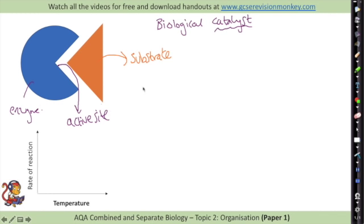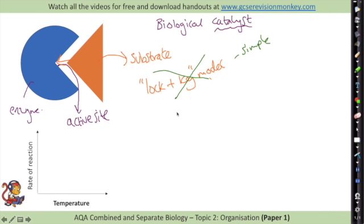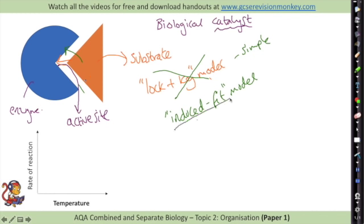This idea is called the lock and key model - the enzyme is our lock with a specific shape, and the substrate is our key which fits in. However the lock and key model is actually a very simple model. In reality the model that is true for an enzyme is called the induced fit model - the active site changes shape ever so slightly as the substrate fits in to make sure it holds it in place. So it doesn't stay exactly like a simple lock; it will change shape as the substrate binds.